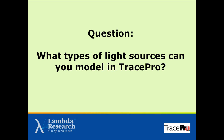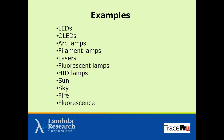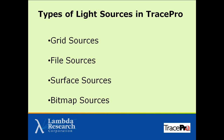So what types of sources can you model in TracePro? The answer is pretty much anything — LEDs, OLEDs, arc lamps, filament lamps, lasers, fluorescent lamps, the sun, the sky, fluorescence. Almost anything that emits light you could model in TracePro in one way or another. There are four basic types of sources in TracePro: grid sources, file sources, surface sources, and bitmap sources.